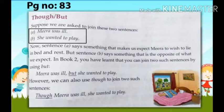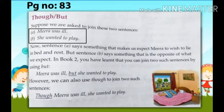Meera khelna chahati hai — aram karne ki jagah. So in Book 2 you have learned that you can join two such sentences by using 'but'. So jaisay ki ab aapne Book 2 mein padh chuke hain, hum is tarha ki do sentences ko 'but' ko use karte hoi join kar sakte hain. That's why here these two sentences are joined by adding 'but' in the middle. But remember: whenever we use 'but' in our sentence, we always use a comma before 'but'.